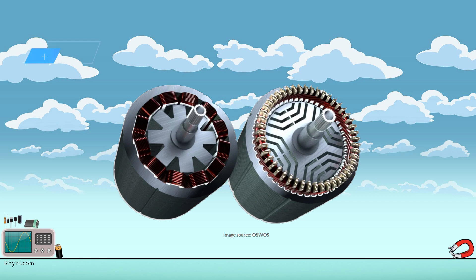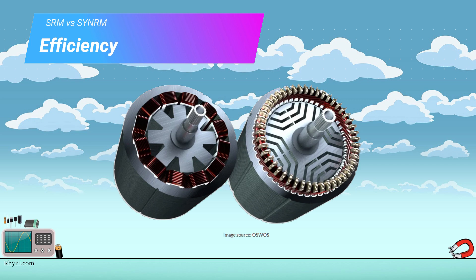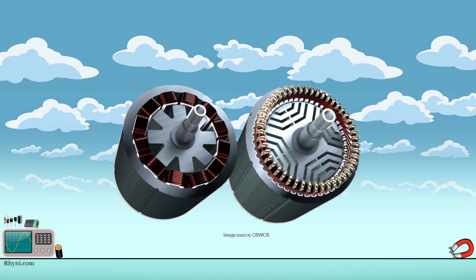Efficiency. The synchronous reluctance motor is highly efficient, which can be designed for an efficiency of up to 98%. In contrast, the switched reluctance motor has a lower efficiency, typically between 80% and 90%.